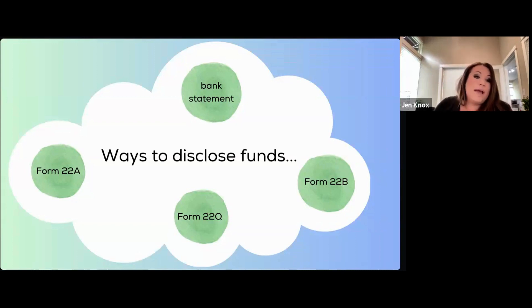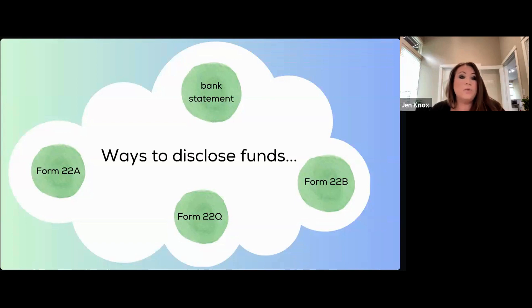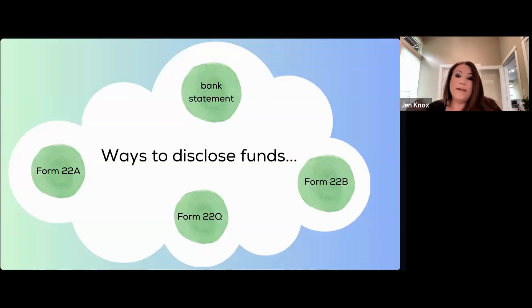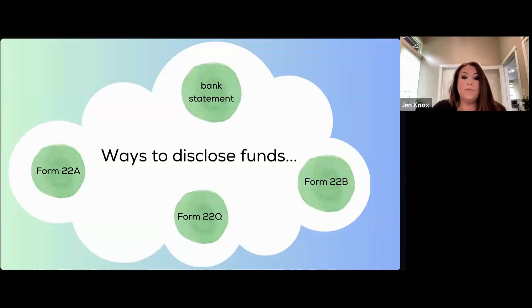We can use a 22A if our client has a loan they're applying for, which may also involve a down payment. If their pending sale is in contract, we use a 22Q. If they need to sell a home, we use a 22B. Bank statements can be used if neither of those forms apply and the buyer is paying cash. For a cash buyer, we can use bank statements or letters. But if we have home sale contingencies, we want to make sure we're not dual-disclosing where those funds are.